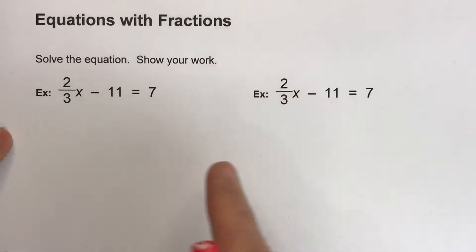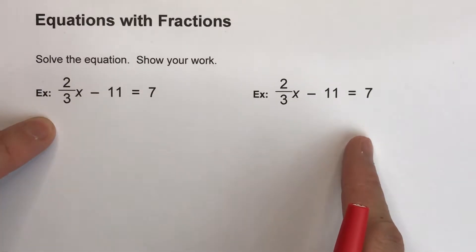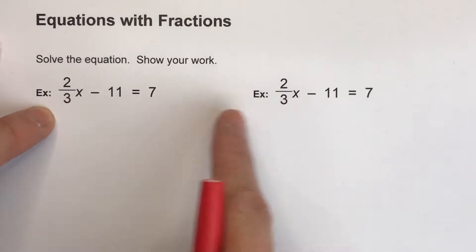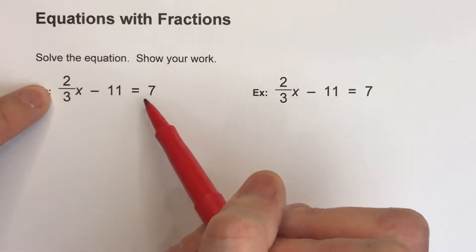Today I'm going to show you how to solve equations with fractions in them, but I'm going to show you how to do it in two different ways. So if you notice, I've got the same equation twice. So 2/3x minus 11 equals 7.